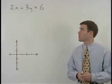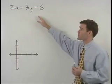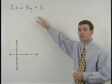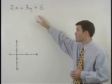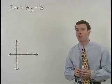To graph the line that has the equation 2x plus 3y equals 6, we would first convert the equation to slope-intercept form.